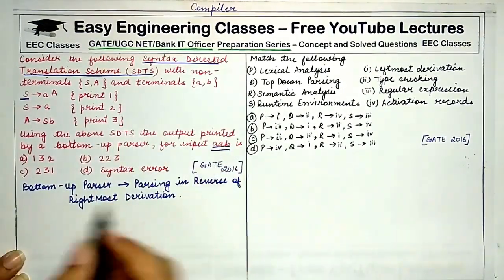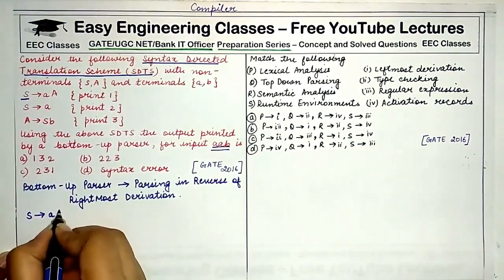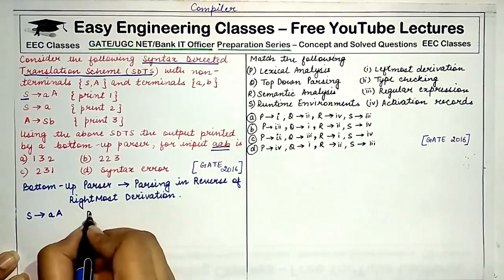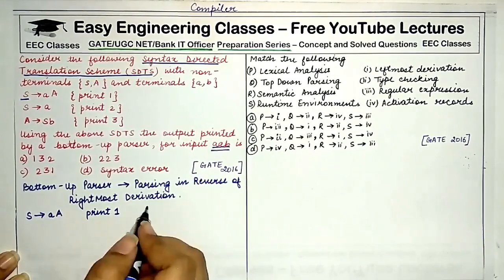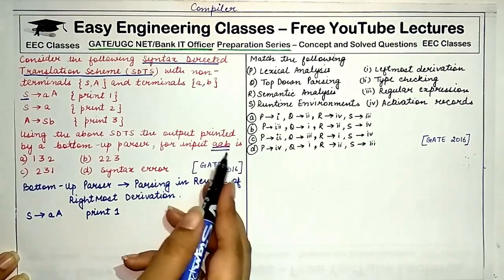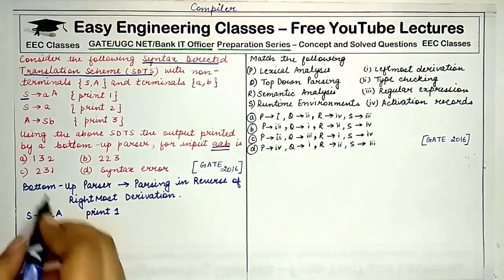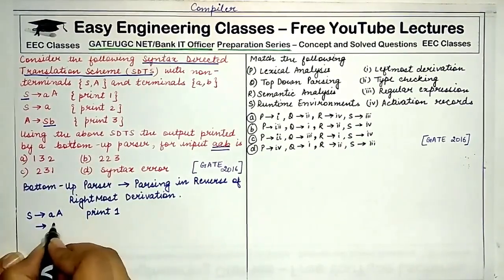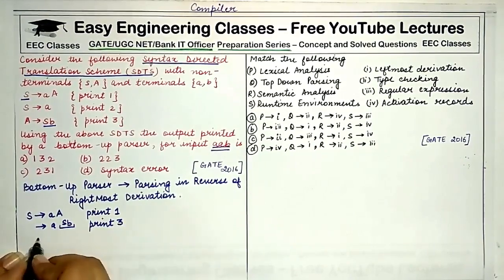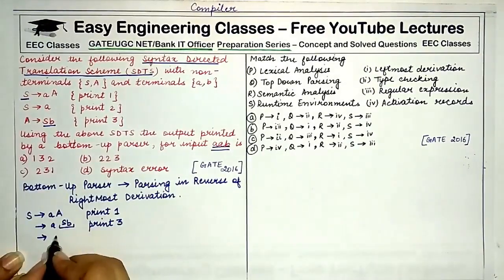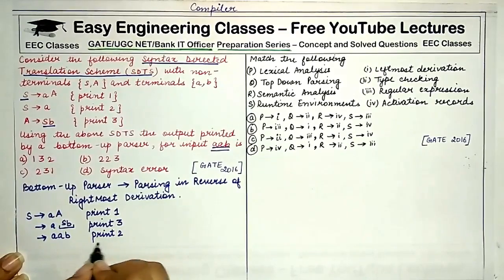To generate AAB, use production S → AA, which prints 1. Then replace capital A with the production A → SB, making it A followed by SB, which executes print 3. Then replace S using S → A, giving AAB — the required string — and print 2 is executed.